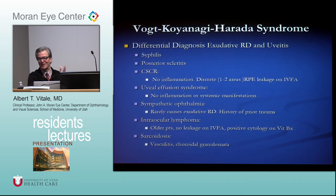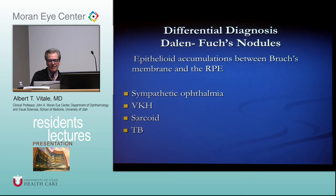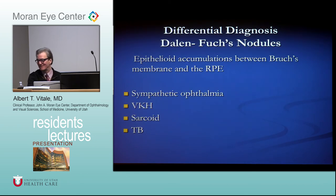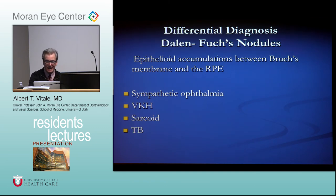The differential diagnosis of exudative retinal detachment with uveitis includes syphilis, posterior scleritis, central serous, uveal effusion syndrome, sympathetic ophthalmia, intraocular lymphoma, and sarcoidosis. Dalen-Fuchs nodules are seen in sympathetic ophthalmia, VKH, and can also occur in TB.